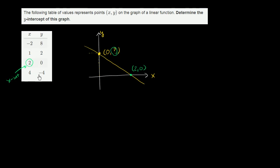So let me rewrite this table so I can give ourselves a little bit more breathing room. So let's say we have x and we have y. And they already tell us that when x is negative 2, y is 8. And I actually want to think about what happens when x is negative 1, when x is 0.